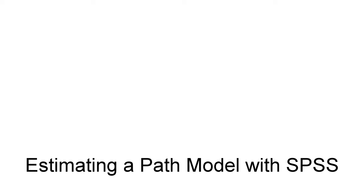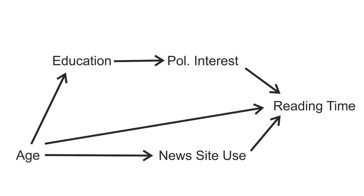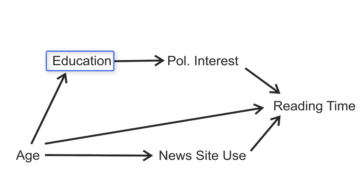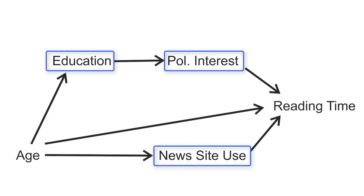Estimating a path model with SPSS. This diagram of a path model summarizes our hypotheses. We have newspaper reading time as the final outcome variable, and we have age as the predictor. Education, political interest, and news site use are mediators.